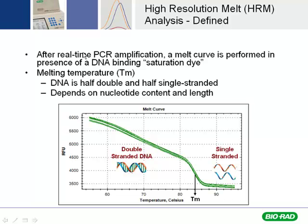For those of you who have never seen a melt curve before, after real-time PCR amplification, a melt curve can be performed in the presence of a DNA binding dye. For HRM, we typically recommend what's called a saturating dye, because a saturating dye allows the dye molecules to completely occupy the entire amplicon. With SYBR Green, because it is a known inhibitor of Taq polymerase, you can't use enough to get complete saturation of the amplicon. I'll describe the effect of this a bit later in this presentation.